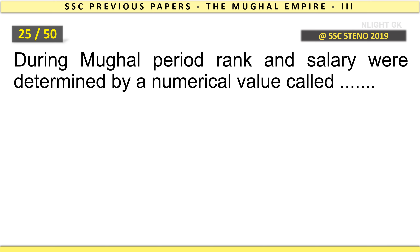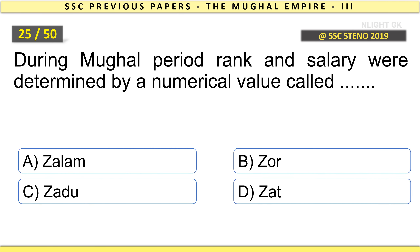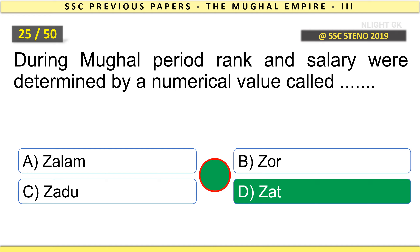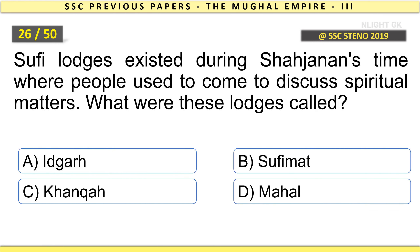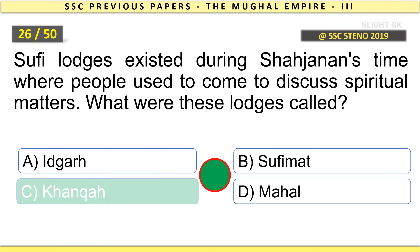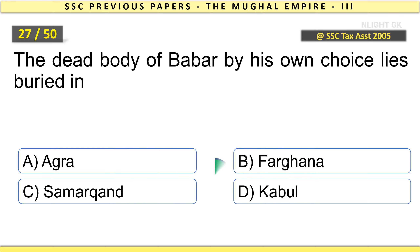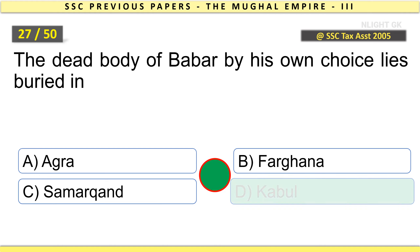During the Mughal period, rank and salary were determined by a numerical value called Zat. Sufi lodges existed during Shah Jahan's time where people used to come to discuss spiritual matters. What were these lodges called? Khanqah. The dead body of Babur by his own choice lies buried in Kabul.